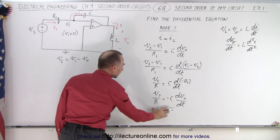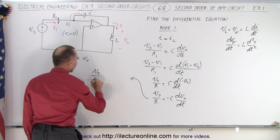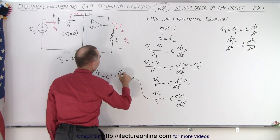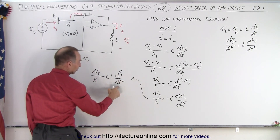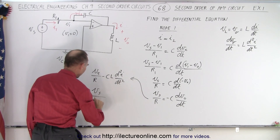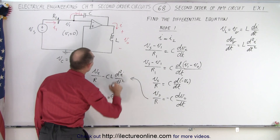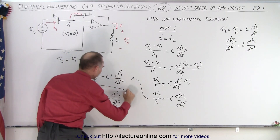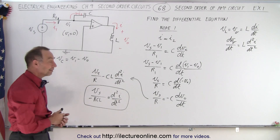Plugging that in, we have the source voltage divided by R, minus C times L times the second derivative of I with respect to time. Finally, isolating the differential term, we can say that the source voltage divided by negative RCL is equal to the second derivative of the current through the inductor with respect to time. And there is our differential equation — we don't need to solve it, we just have to come up with the equation, and that is how it's done.